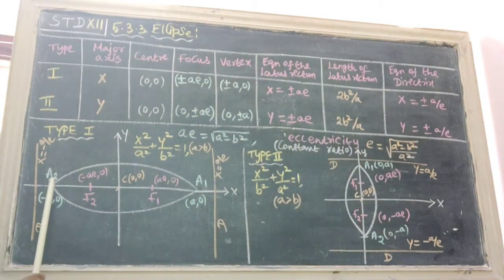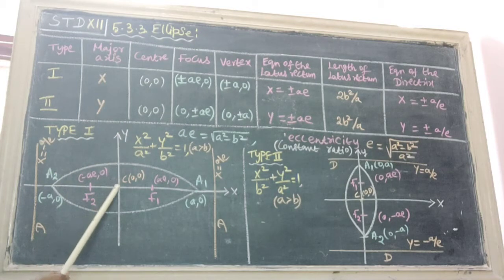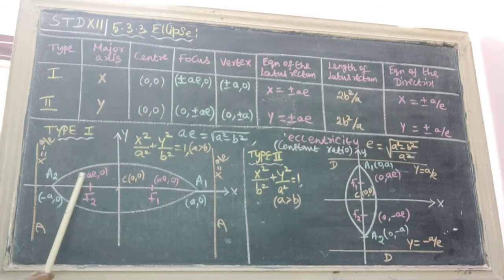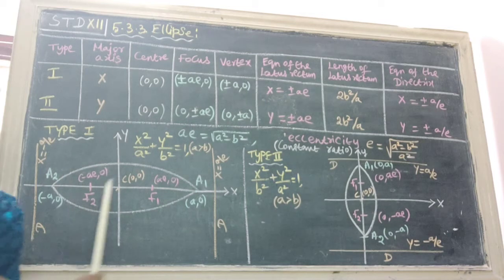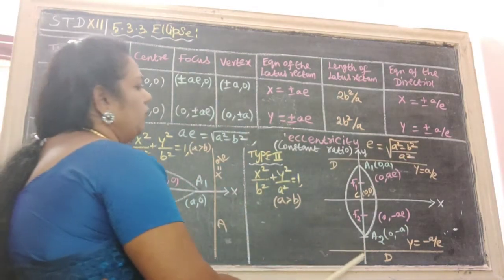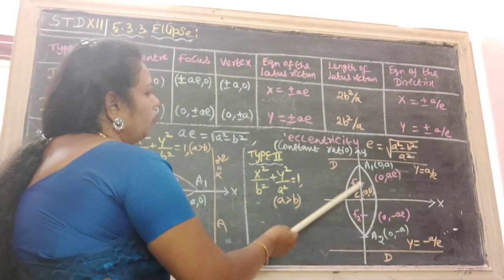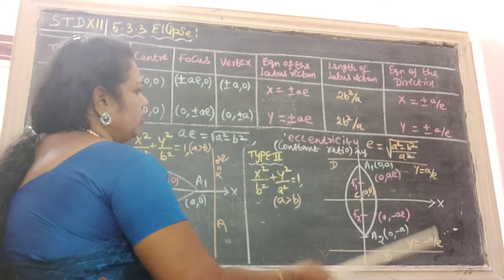A1, A2 are the vertices. Center is here. F1, F2 are the focus. Next one, directrix. The diagram shows all these elements.